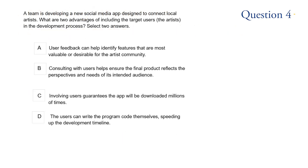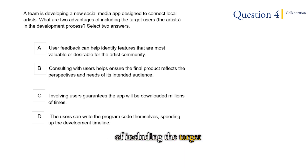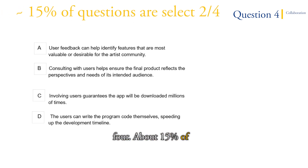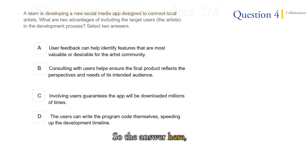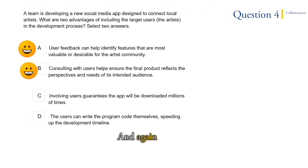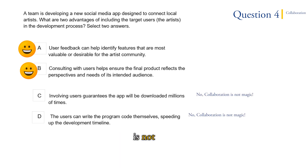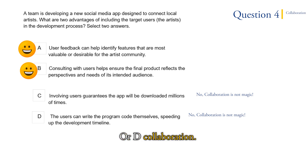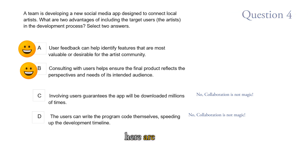Question 4: A team is developing a new social media app designed to connect local artists. What are two advantages of including the target users in the development process? This is a question where you have to select two out of four — about 15% of exam questions are like this. The answers are A and B, using your common sense. The concept here is that collaboration is not magic — it's good, but not magic. C suggests collaboration will make the app downloaded millions of times — that's magic. D suggests the program can code itself — that overstates the effect of collaboration. Your answers are A and B.